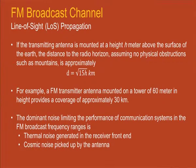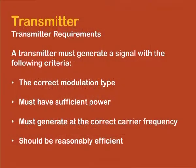The dominant noise limiting the performance of communication systems in line of sight propagation is the thermal noise generated by the receiver front end and the cosmic noise picked up by the antenna. A transmitter must generate a signal meeting the following criteria: correct modulation type, sufficient power for adequate signal strength at the edge of coverage, output at the correct carrier frequency, and reasonable power consumption efficiency.